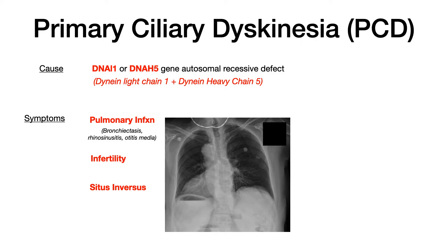The last major high-yield symptom of Primary Ciliary Dyskinesia is situs inversus — essentially a flip-flopping of the thoracoabdominal orientation. This occurs because during embryogenesis, motile cilia are needed to establish the correct thoracoabdominal orientation. In about half of patients with Primary Ciliary Dyskinesia, they'll have situs inversus because normal ciliary motion is needed for proper formation of the thoracoabdominal viscera. Without it, things don't migrate correctly, causing this flip-flopping in embryogenesis.